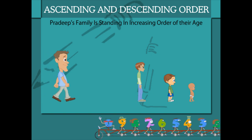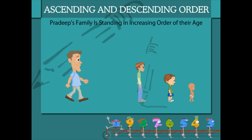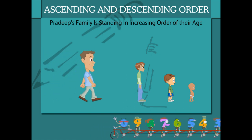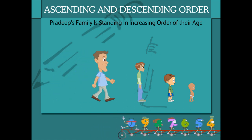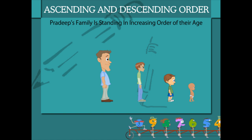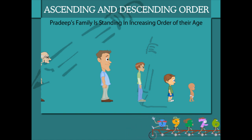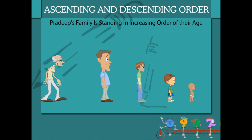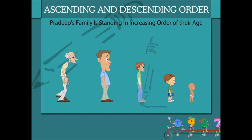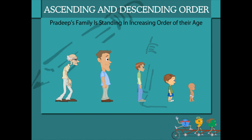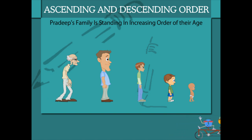Pradeep's father stands behind Pradeep's elder brother. Pradeep's father is 40 years old. Look, there comes Pradeep's grandpa. He is 70 years old. Pradeep's family is in ascending order of their ages.